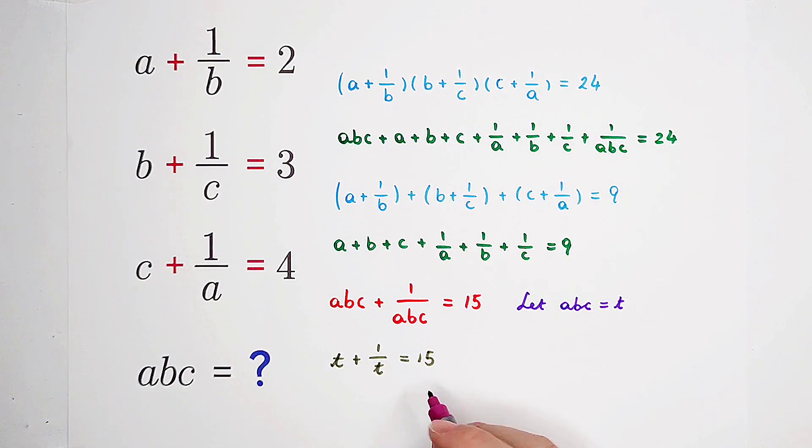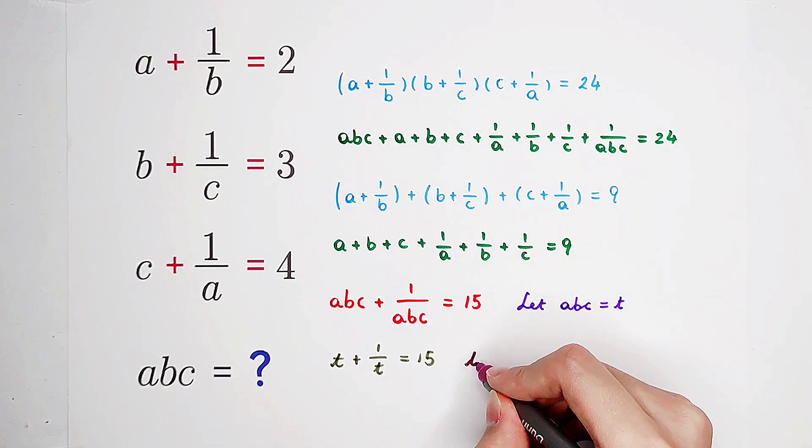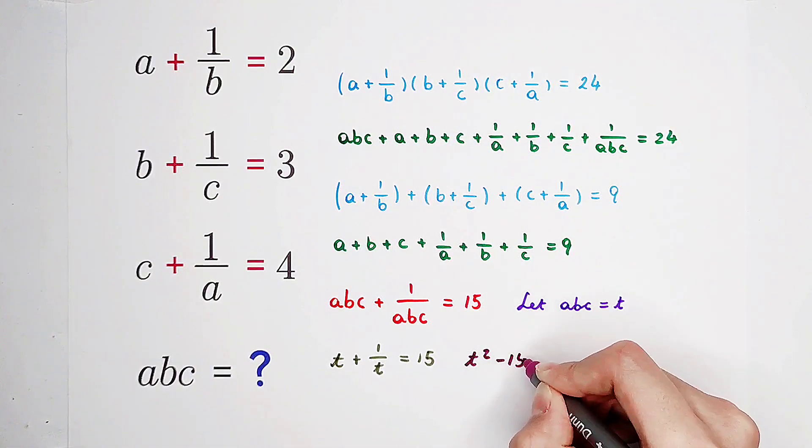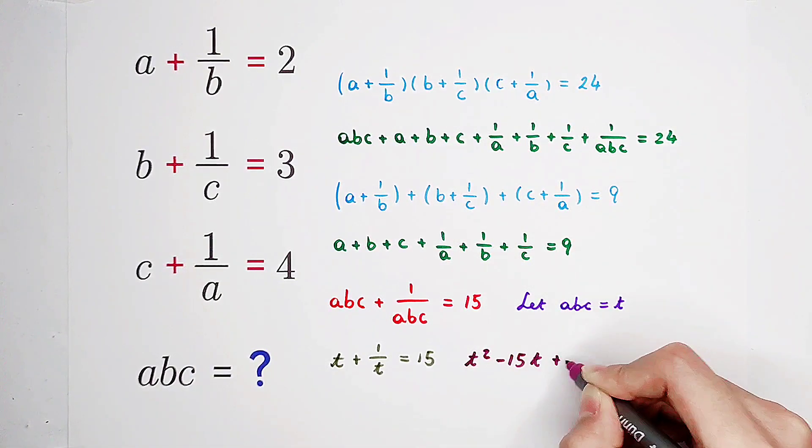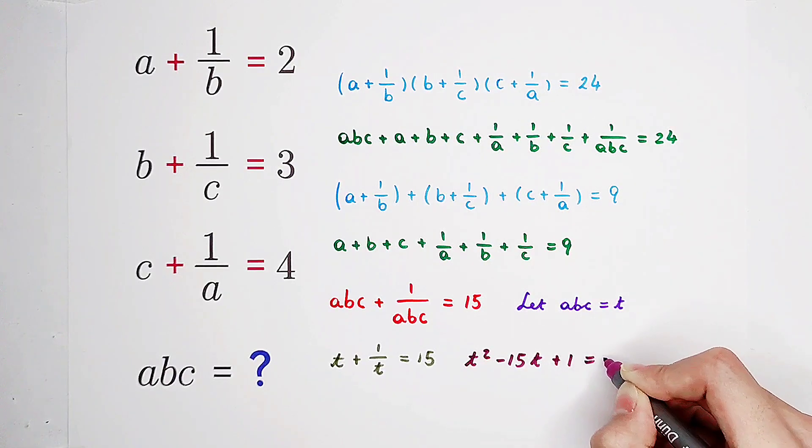It's just t plus one over t equals 15 times t on the both sides.